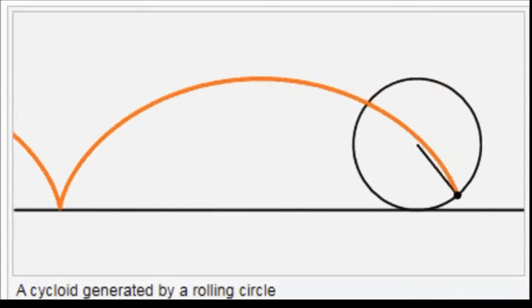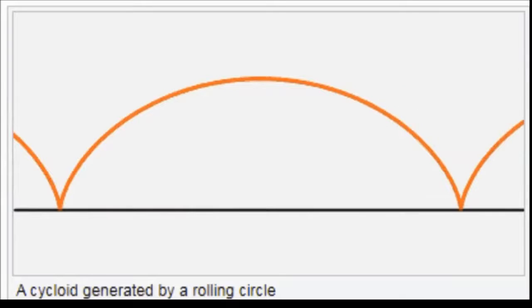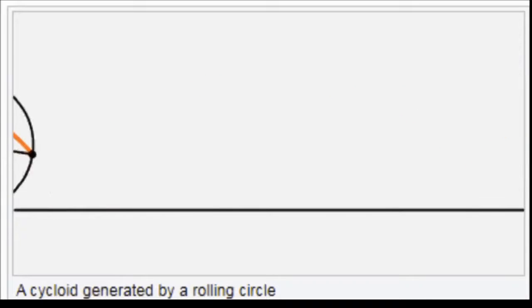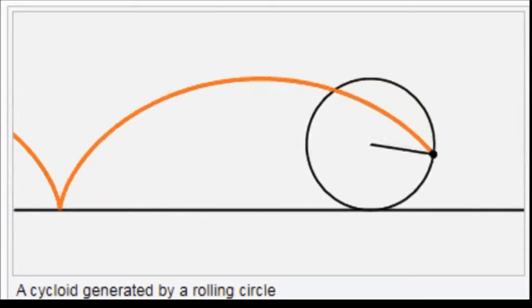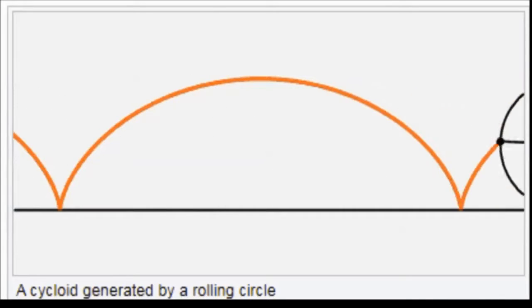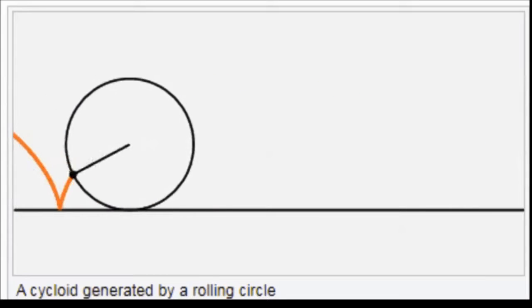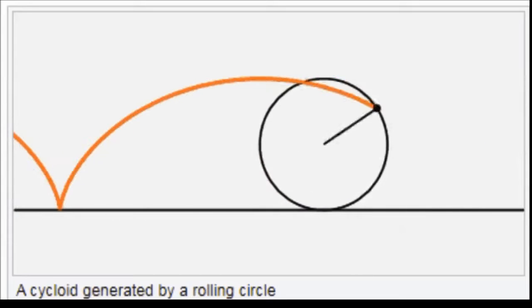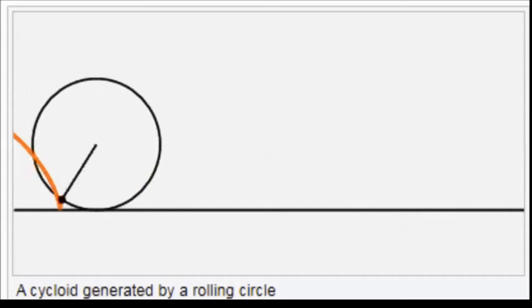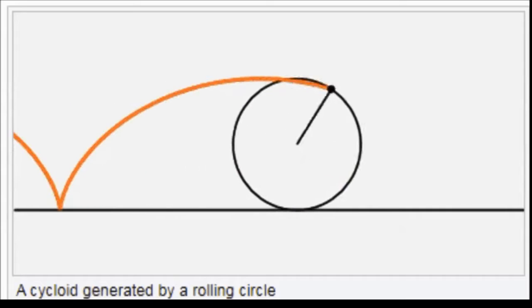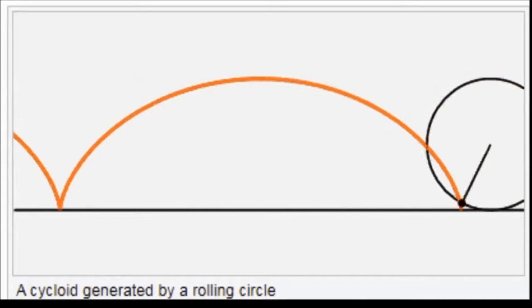The cycloid is a continuous curve. It is not differentiable, though, at countably many points — at exactly those points where the point whose locus is being traced returns back to touch the given straight line.